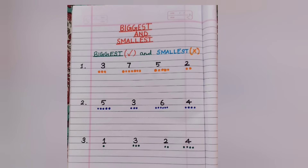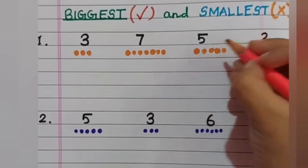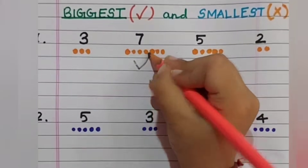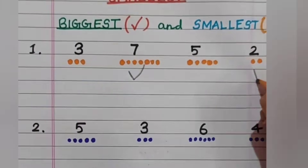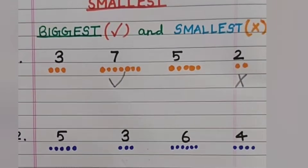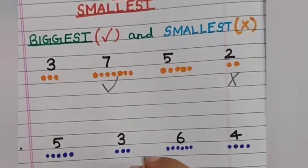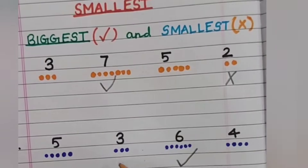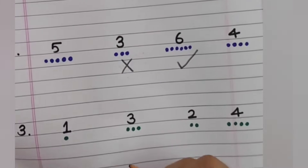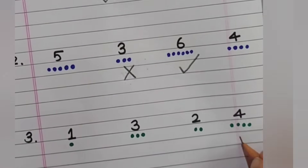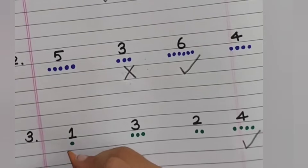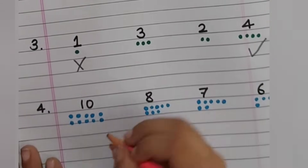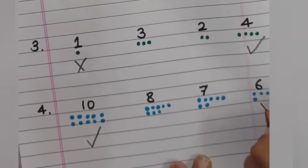Find out the biggest and smallest number by counting the dots. Question one: the biggest number is seven and the smallest number is two. Next question: the biggest number is six and the smallest is three. Again, counting the dots: biggest number is four and smallest is one. And the last: biggest number is ten and smallest number is six.